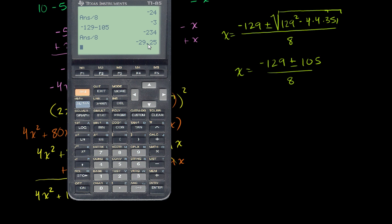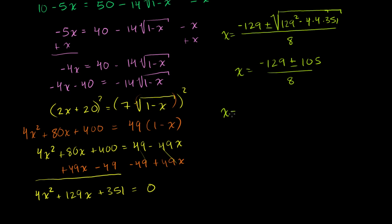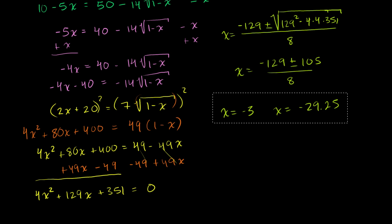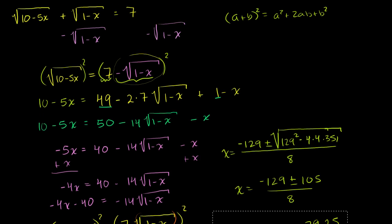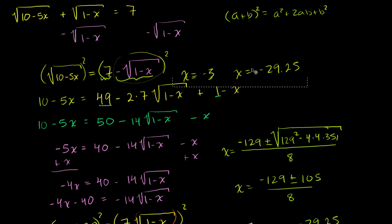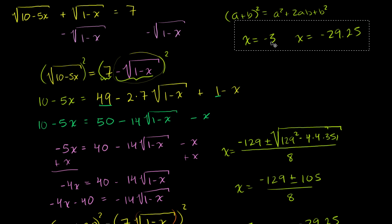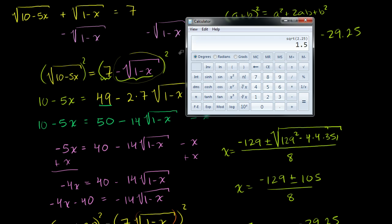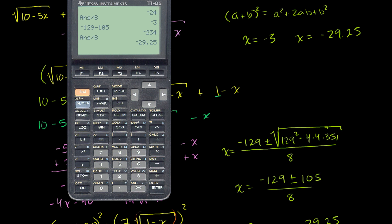Our two answers are x equals negative 3 and x equals negative 29.25. Remember, this is a radical equation, so we have to validate that both of these work — or if they don't work, they're going to be extraneous solutions. Let's go back up to our original problem and evaluate them.